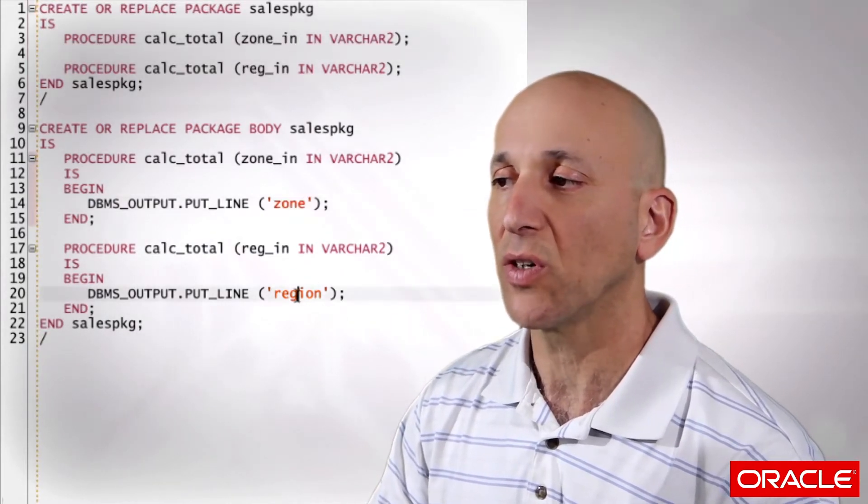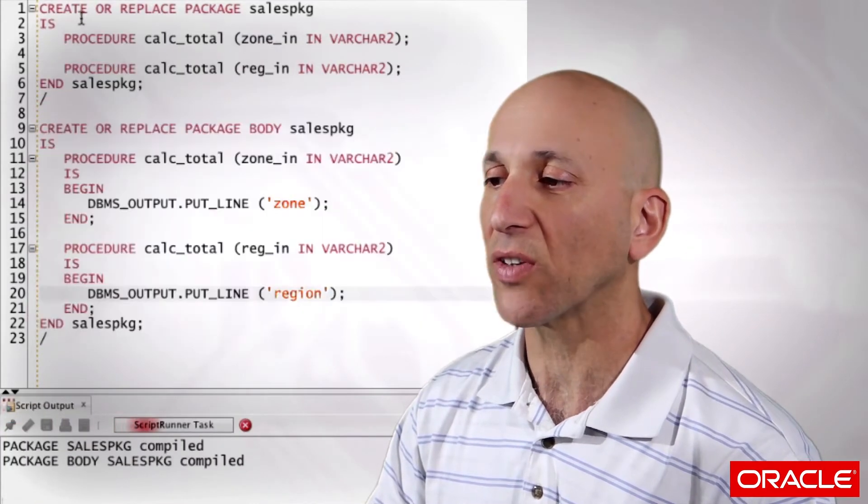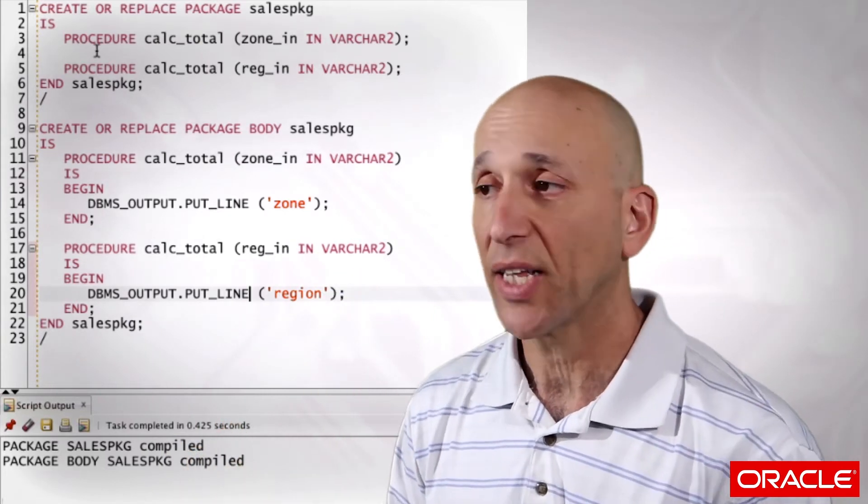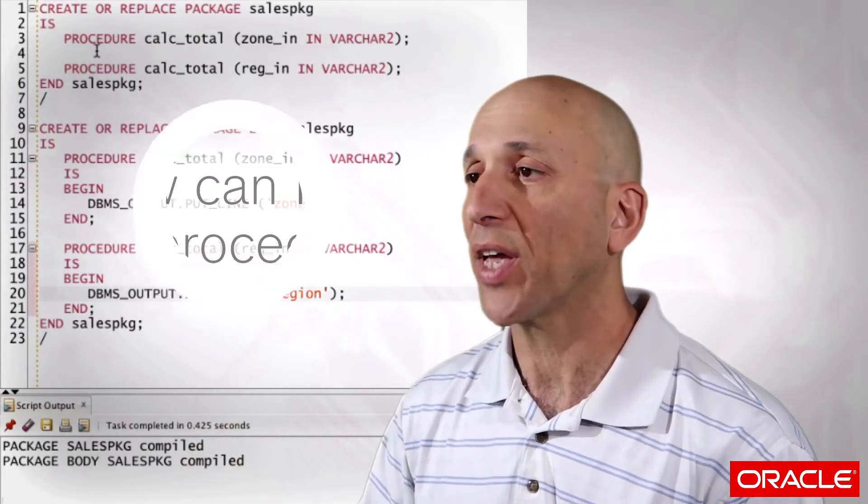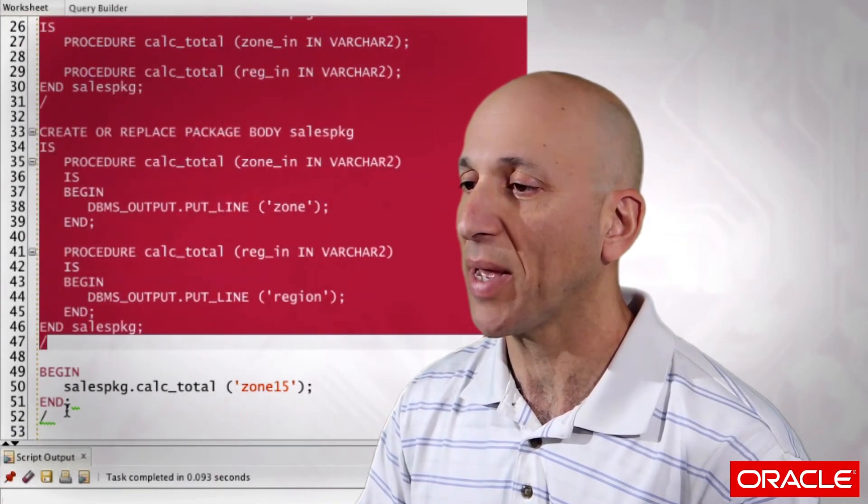Now, if I try to compile this code, Oracle says cool, everything's fine, you got a valid package. The question then becomes, how can I call this code? Let me count the ways. There aren't that many. So let's first of all try to call it.